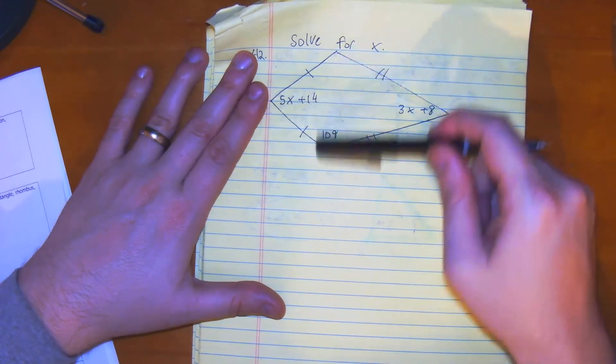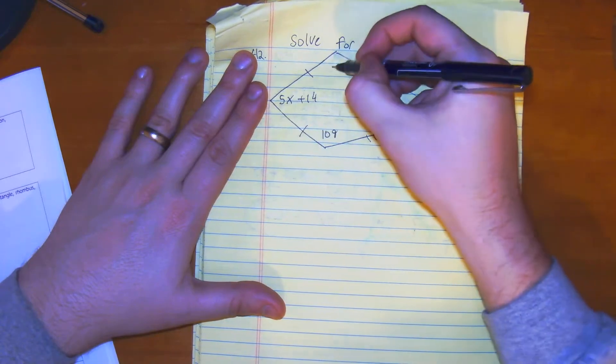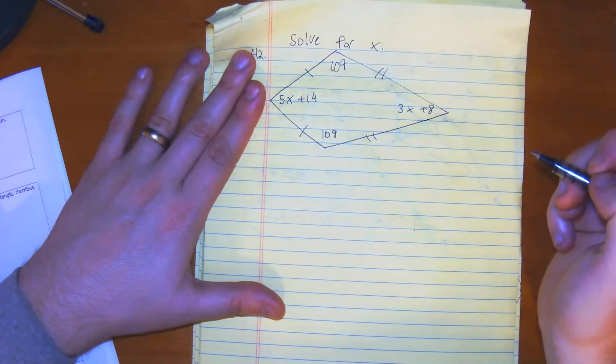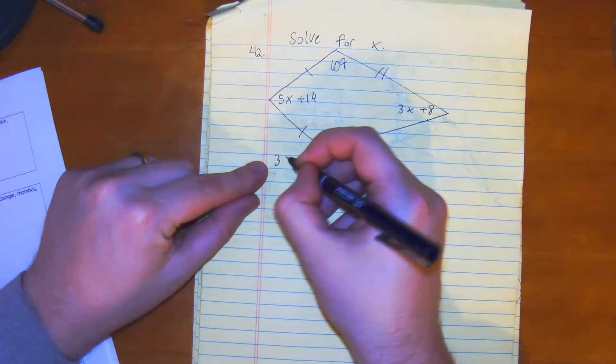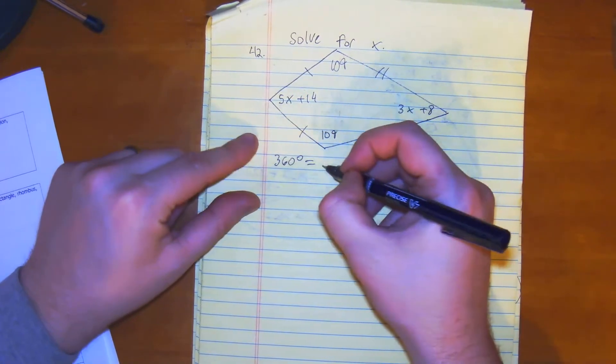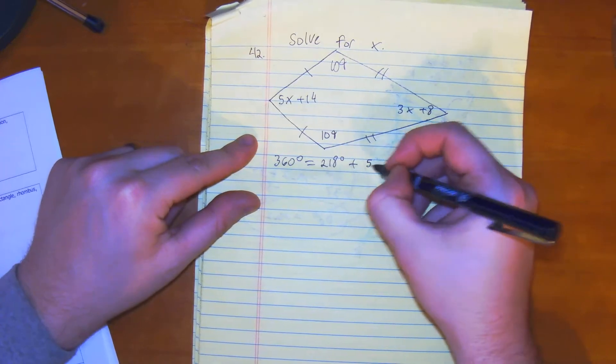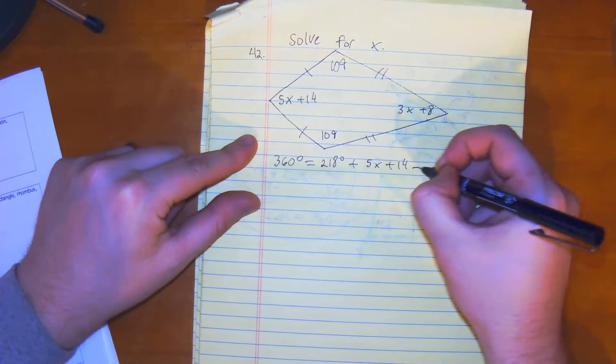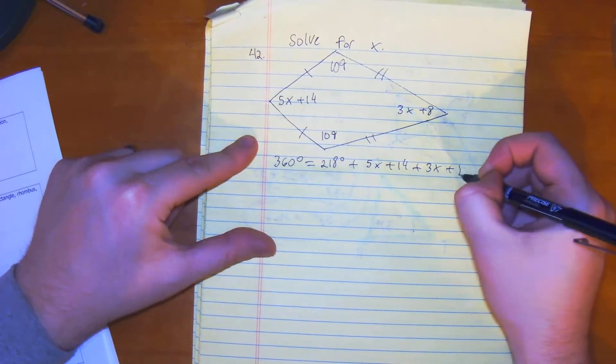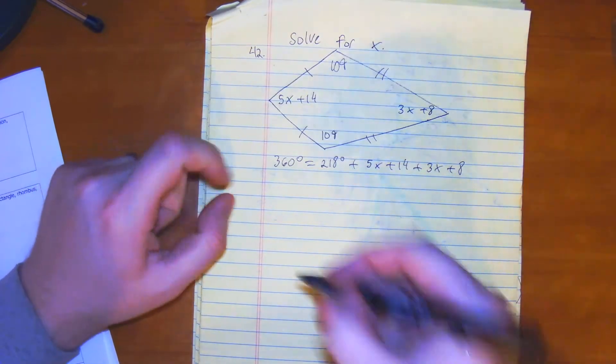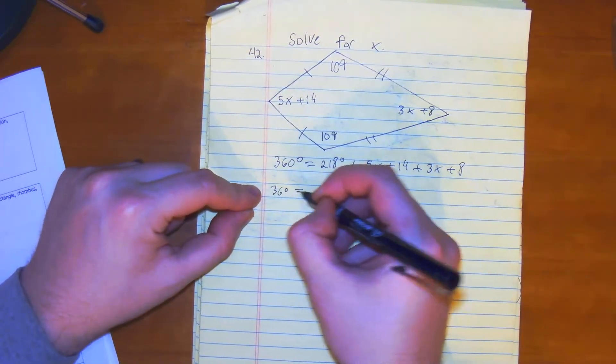But we do know the opposite side is always going to be equal. So if that's 109, this has to be 109. So we have 360 degrees is equal to 109 plus 109, so 218 plus 5x plus 14 plus 3x plus 8. So we have 360 is equal to...